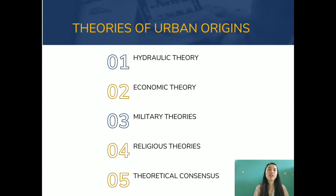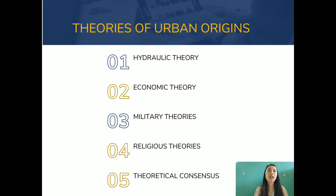In the economic theory, several theories suggest that the development of complex large-scale trading networks stimulated the growth of urban society. For example, Southern Mesopotamia did not have many raw materials such as metallic ores, timber, or stone for tools, making trade essential. This required an administered organization to control the procurement, production, and distribution of goods. Such an organization would have been a powerful agent in the community, and its power may well have extended beyond trade into other aspects of society.